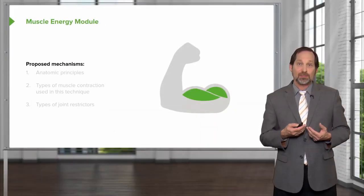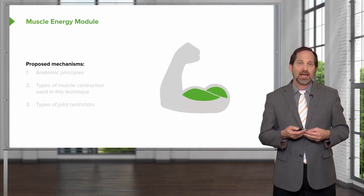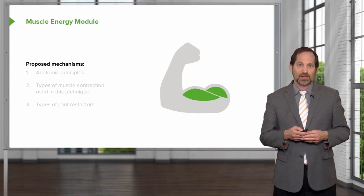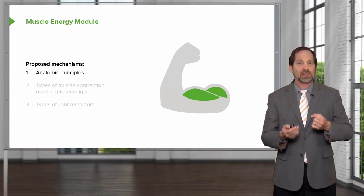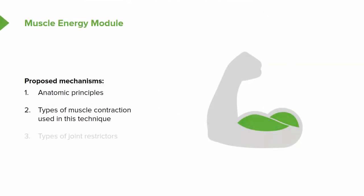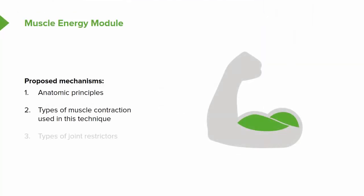Muscle energy is using the body's own muscle and own activity to release motion. It is based on anatomical principles. You look at the biomechanics of the body, where it should be going, and the type of muscle contraction that would help release it. It does have to take into account joint restrictions, joint activity, and general motion.